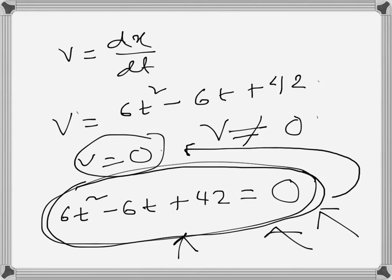Since the discriminant is less than 0, this velocity equation also does not have any real root. So the velocity cannot be 0 for any real value of t. That means the velocity is never 0, and so the particle does not come to rest at any time.